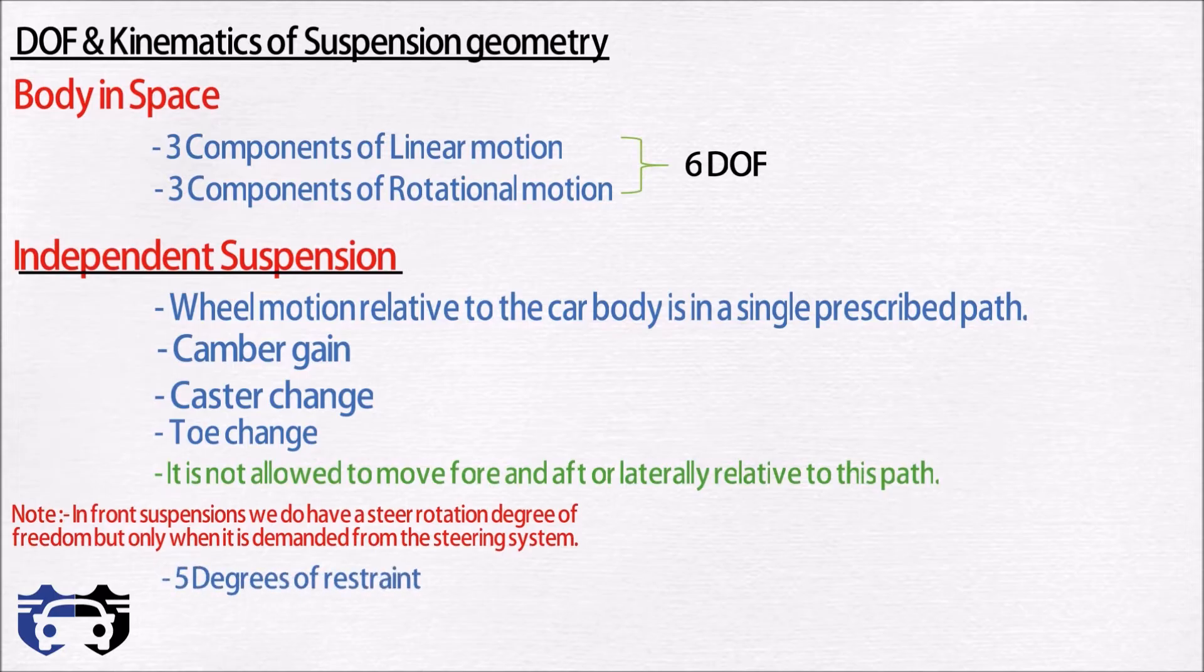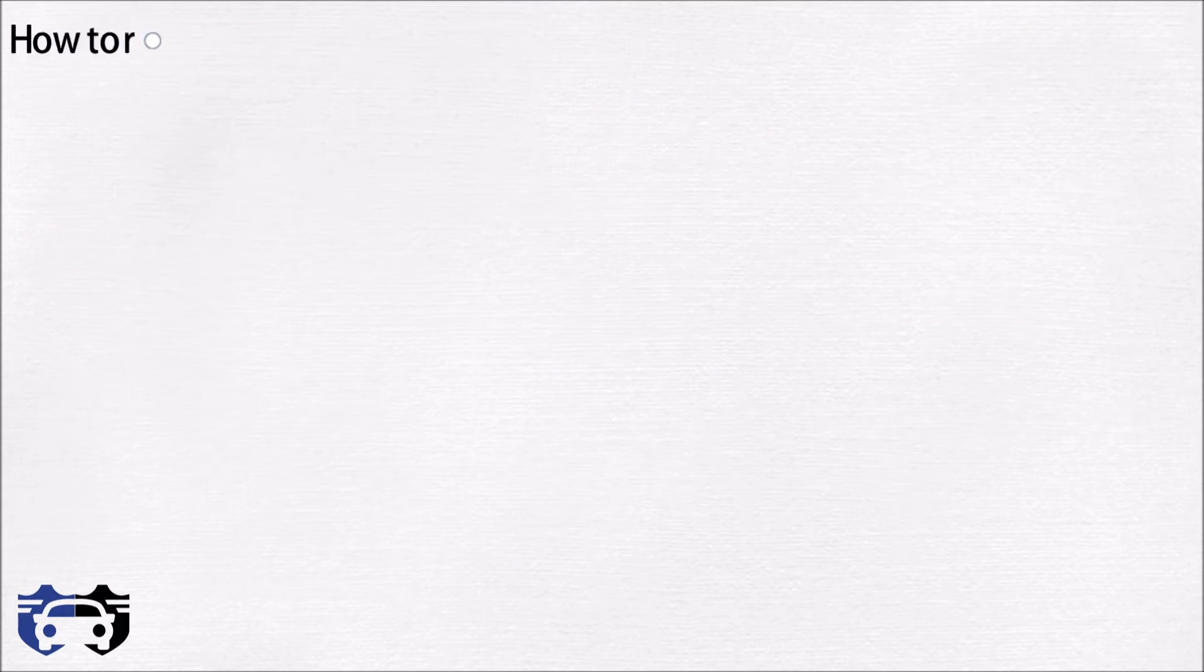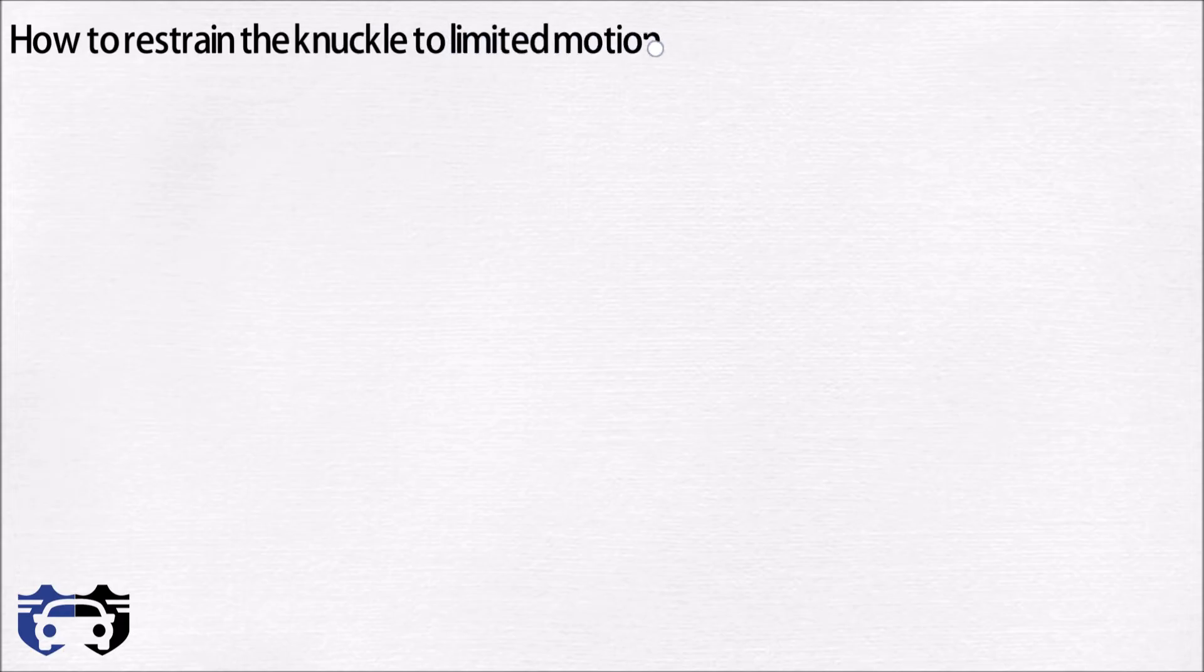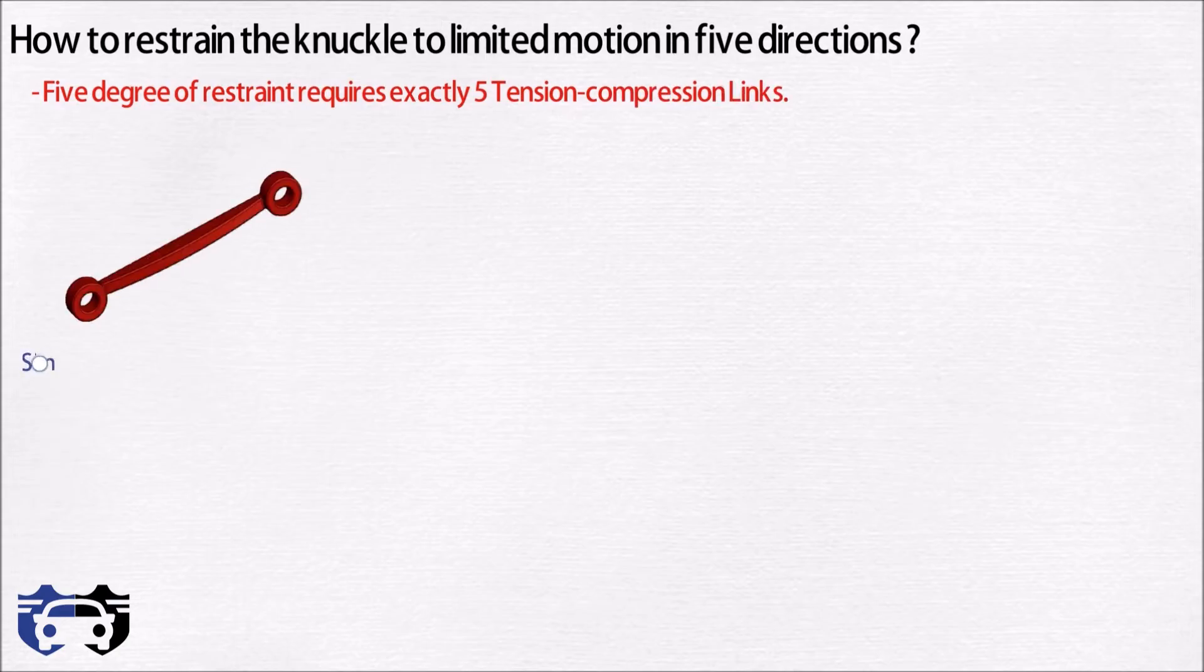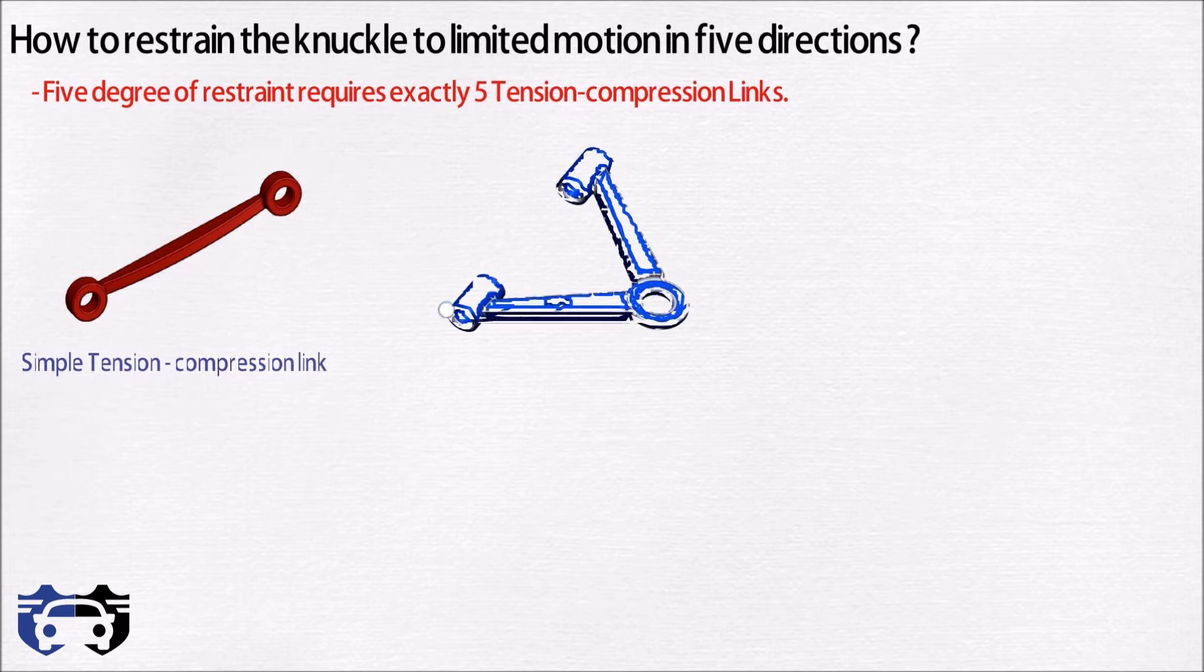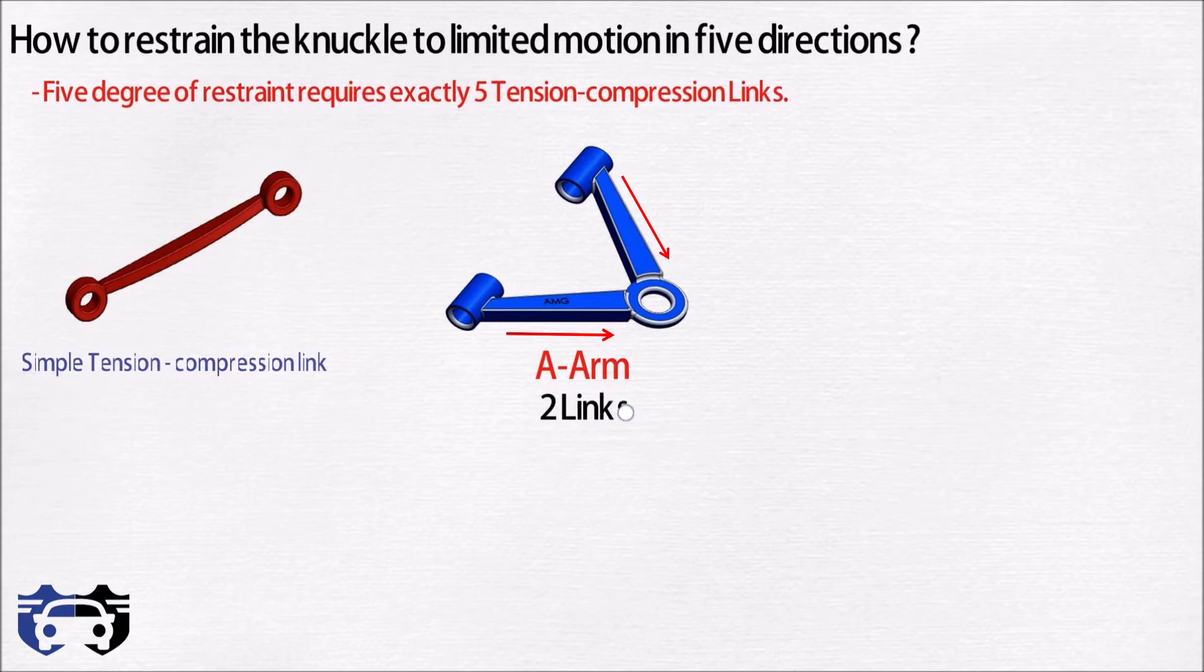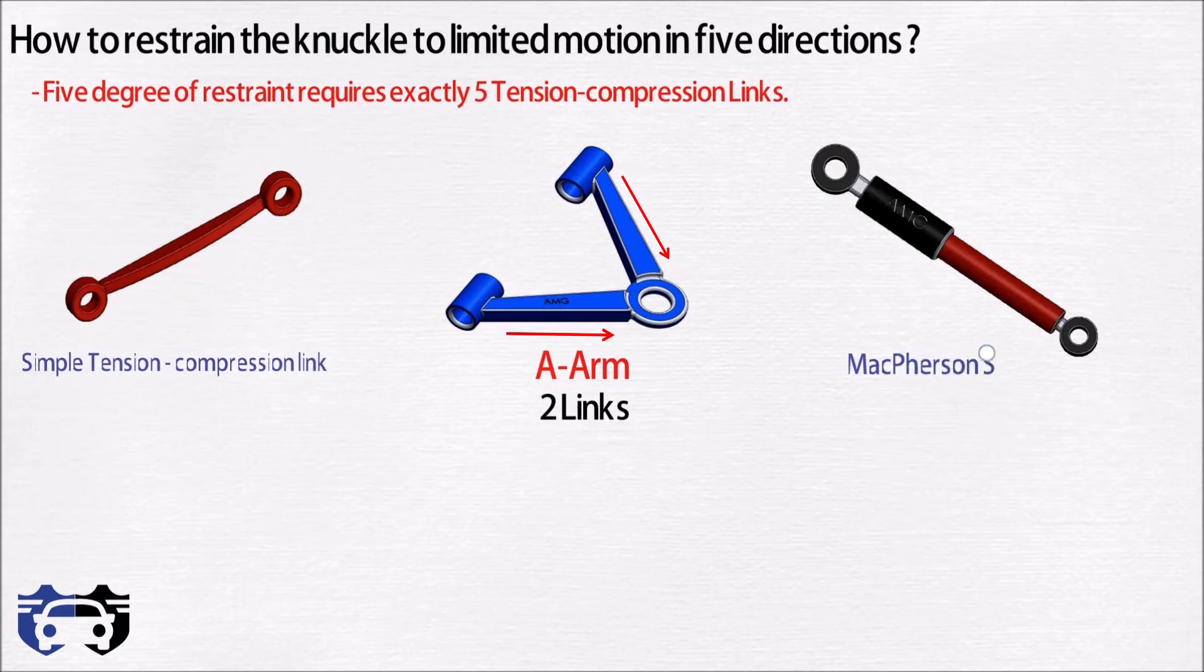The study of independent suspension geometry is to determine how to restrain the knuckle to limited motion in five directions. Five degrees of restraint requires exactly five tension and compression links. This is how a simple tension and compression link looks like. Similarly, you can see an A-arm is really equivalent to two straight links with the outer ends coming together at the ball joint, and a McPherson strut is kinematically a slider mechanism which equals an A-arm that is infinitely long at right angles to the slider travel.